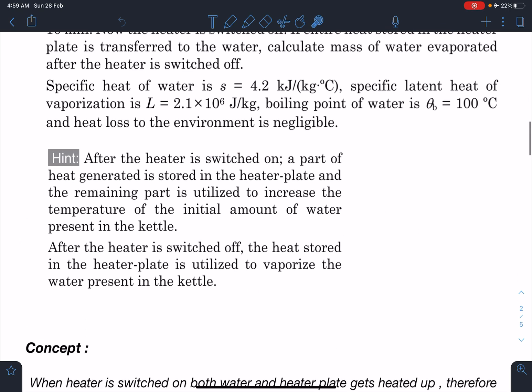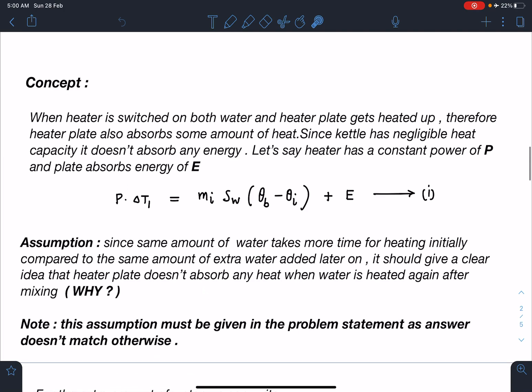Let's discuss the concept part of this problem, it's kind of theoretical. When heater is switched on, both water and heater plate get heated up. Therefore heater plate also absorbs some amount of heat. Since the kettle has negligible heat capacity, it doesn't absorb any energy. So the total energy supplied by the heater goes for boiling the water plus it increases the temperature of the plate.